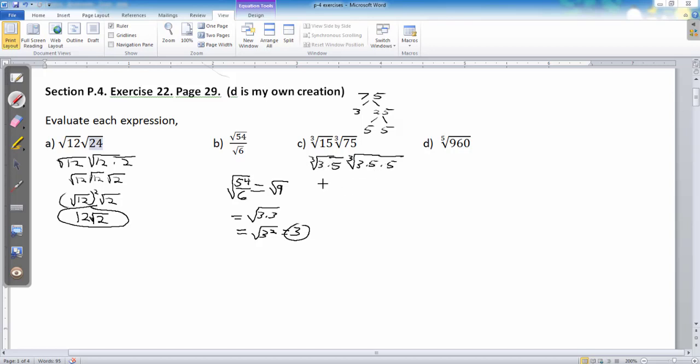And, I'm just going to combine this all into a single root. So, now, we have the cube root of, I have two 3s, so that's 3 to the 2. And, I have three 5s, so 5 to the 3.